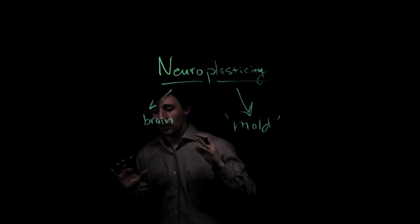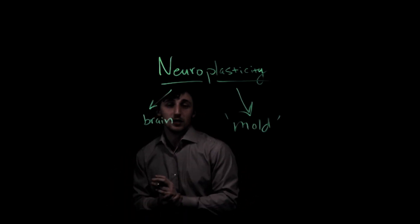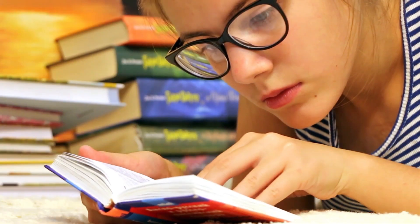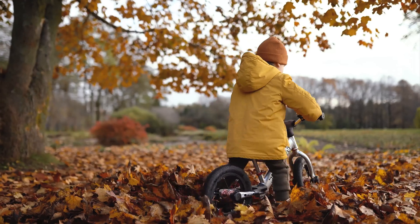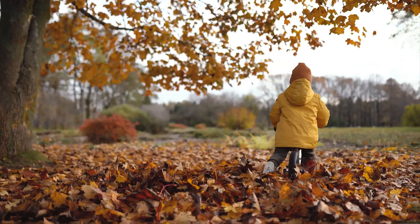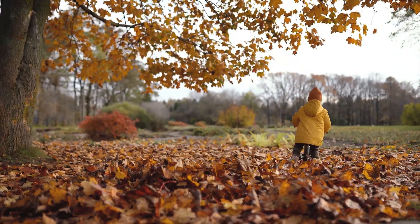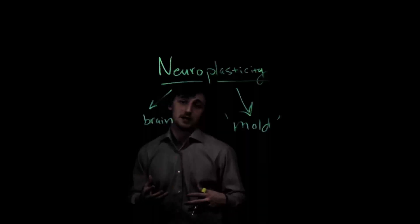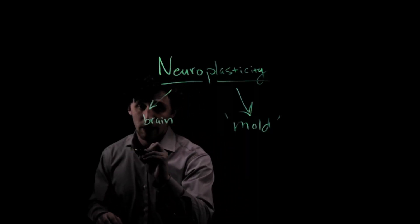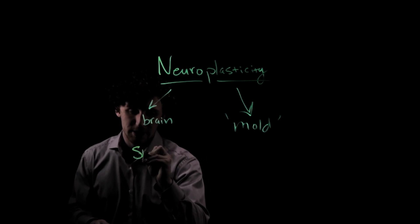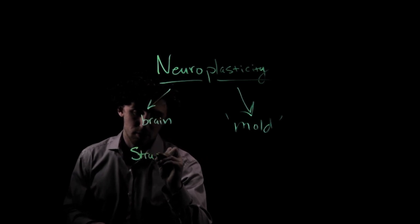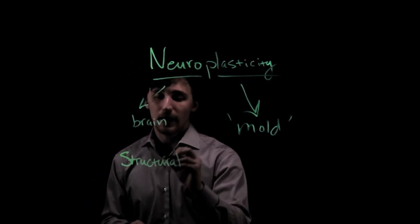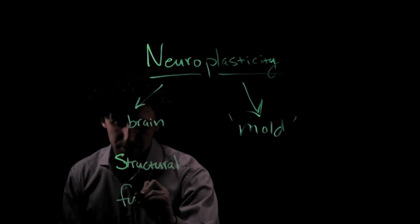Neuroplasticity is involved anytime we are experiencing a new experience or learning new material — an example being learning how to ride a bike, or rehearsing lines to memorize something. There are two kinds of neuroplasticity: structural neuroplasticity and functional neuroplasticity.